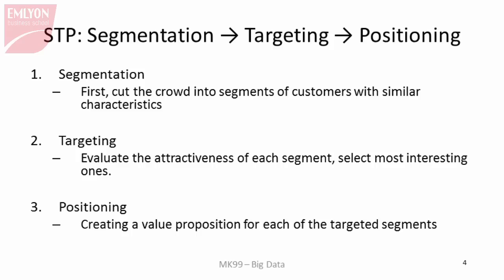Once you have identified these groups, targeting consists in selecting the most attractive of these groups in terms of profitability, and in terms of feasibility of addressing them — meaning you might have experience addressing these groups or products already fitting their needs. So you select only the segments that your activity allows you to address. Finally, the positioning step consists in crafting your product in such a way that it perfectly matches the expectations of the segments identified in the targeting phase.